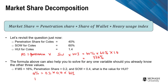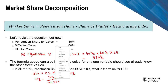So HUI equals — moving the other terms to the other side, it becomes division — 16% divided by (0.2 times 0.4). That gives you the value of HUI. I hope that makes sense on how you calculate your market share.